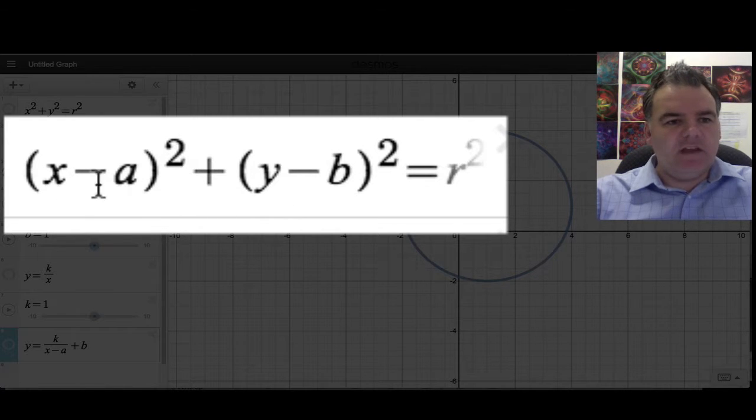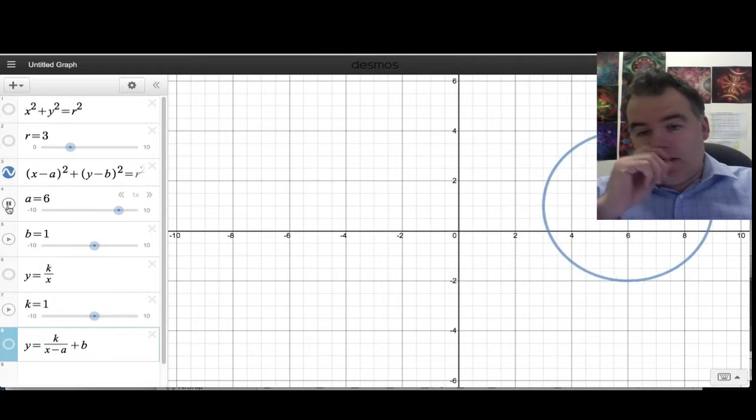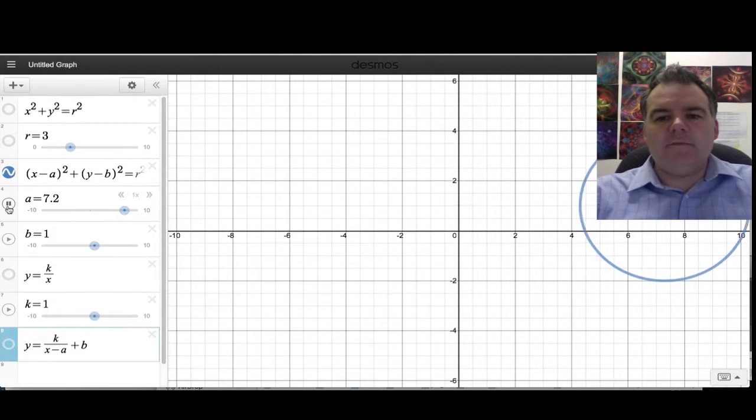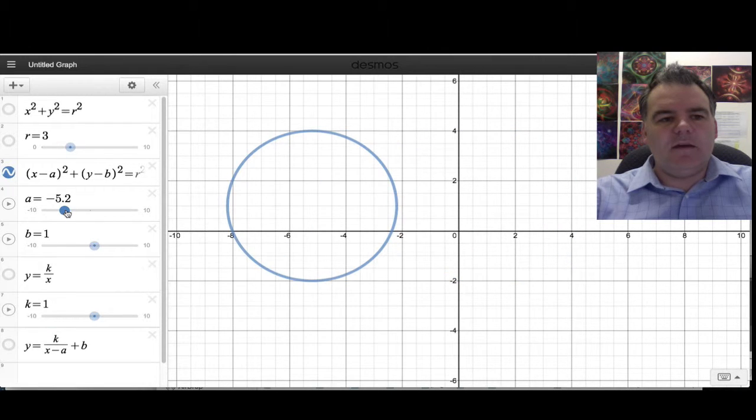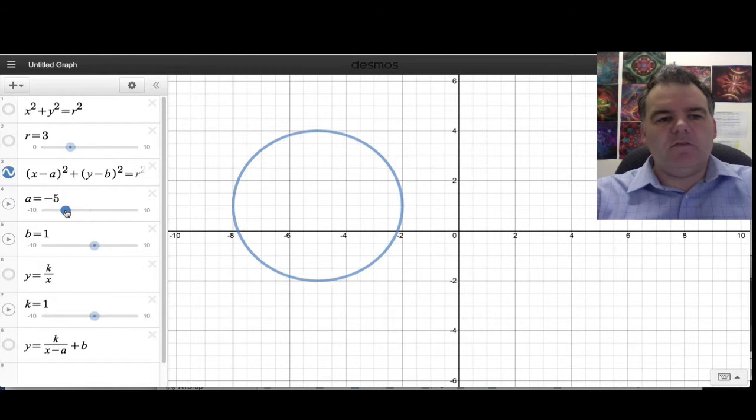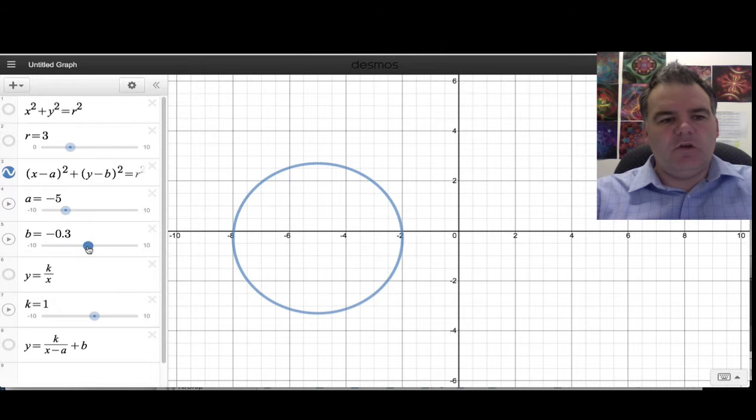So it's a transformation again. So the x minus a thing, what's the value of x that makes that 0? In this case, when a is 1, it's 1, which means that the centre of the circle has been shifted across 1. If I just press play there, you can see changing the value of a moves the circle horizontally across. So this would be (x + 5)² over here. So we've moved it 5 to the left-hand side. And same thing for the value of b in here. The value of b just shifts the centre of the circle vertically up and down. That's what those two numbers there do.